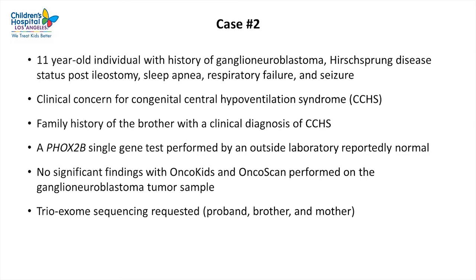The second case is an 11-year-old patient with a history of ganglioneuroblastoma, Hirschsprung disease, sleep apnea, respiratory failure, and seizure. There was a strong clinical concern for congenital central hypoventilation syndrome (CCHS). A family history of a brother with a clinical diagnosis of CCHS but no molecular diagnosis was noted. A FOXC2B single gene test was performed by an outside laboratory and was reportedly normal, so the assumption was that the patient does not have a polyalanine repeat expansion mutation in the FOXC2B gene.